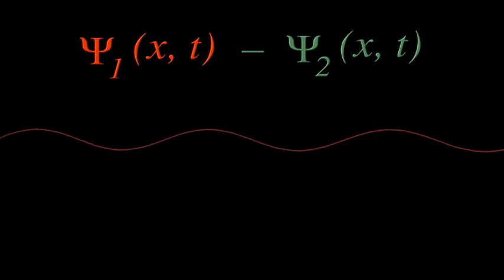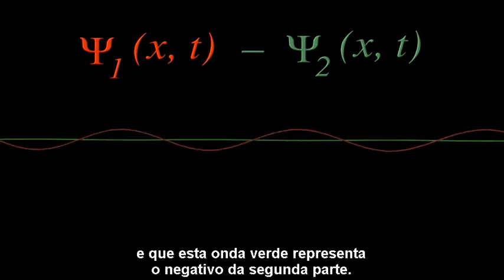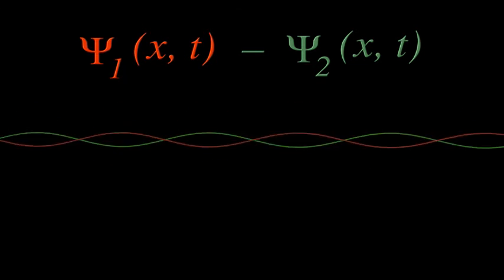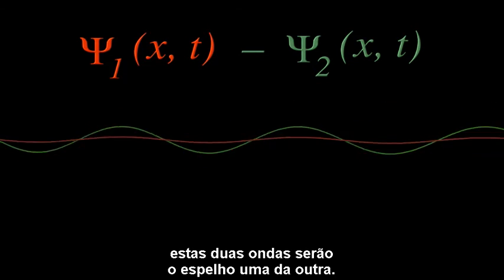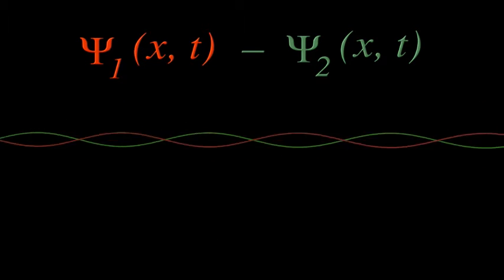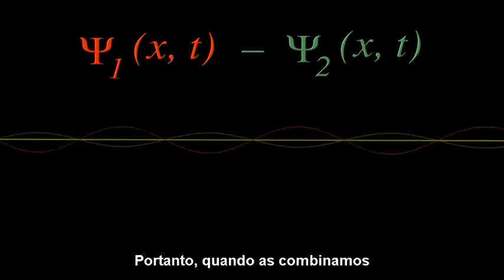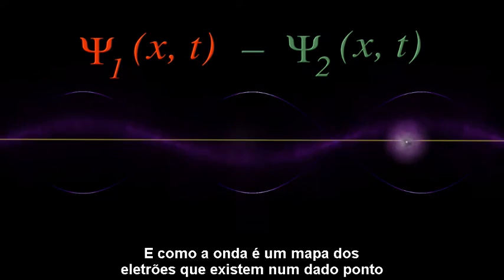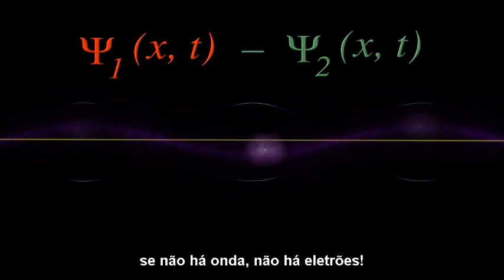Let's let this red wave represent the first part of the combined wave function, and this green wave represent the negative of the second part. If the electrons are in the same state, these two waves will be a mirror image of one another — as one goes up, the other goes down in perfect synchrony. So when we combine them, we get no wave at all. And since the wave is a map of electrons existing at that point, no wave means no electrons.